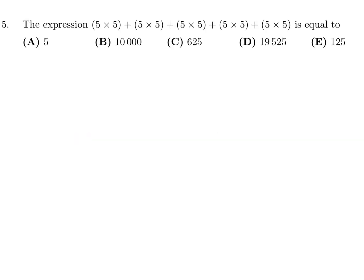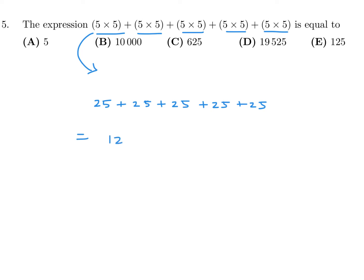Question number 5. The expression is equal to. Each of these terms is 5 times 5 — be careful not to confuse a plus sign for a multiplication sign. They're all 25, and there are 5 of those. You just add them: 25 plus 25 plus 25 plus 25 plus 25 is 125. So E is the answer to number 5.